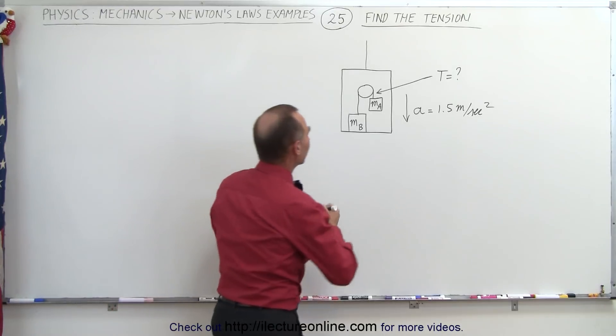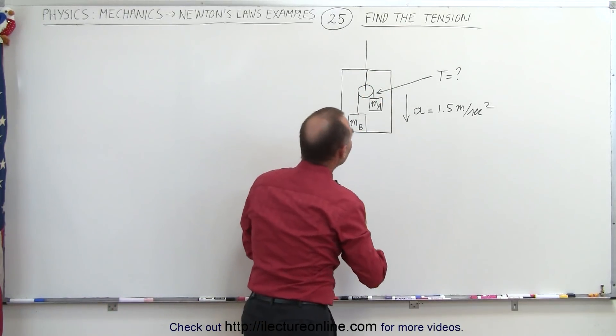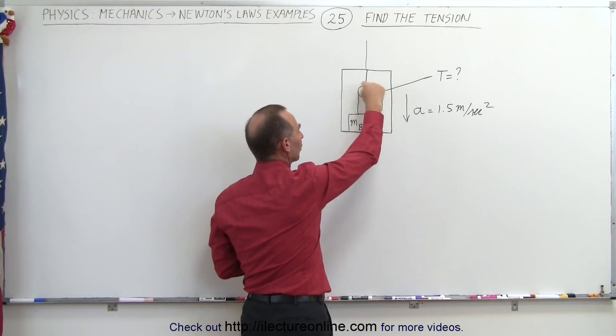In it we have a pulley. Let's assume that the pulley is suspended from the ceiling like this, and we have two masses attached to a string that's going over the pulley.